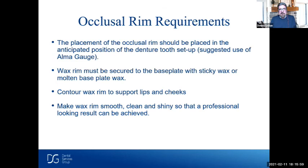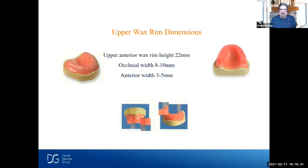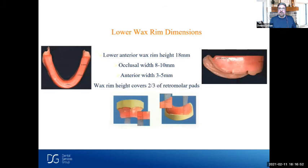We try to contour the wax rim to support the lips and cheeks and give you the exact height you need on the anterior region. On the occlusal rim we establish lip support, provide the occlusal plane and arch form, and record that maxillomandibular relationship. You send it back to us at the laboratory marked with the midline, cuspid line, high lip line, and low lip line — this makes it easier for us to set the denture teeth. On an average, 22 millimeters from the periphery to the incisal edge on the upper, occlusal width about 8 to 10 millimeters, anterior width about 3 to 5 millimeters. For the lower, average height is about 18 millimeters, and the wax rim should cover about two-thirds of the height of the retromolar pad.